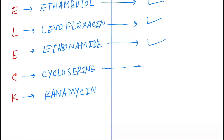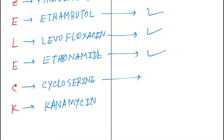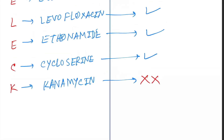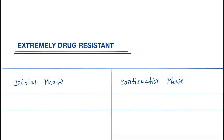In the continuation phase of MDR-TB, pyrazinamide, ethambutol, levofloxacin, ethionamide, and cycloserine are all continued, but kanamycin is not continued.